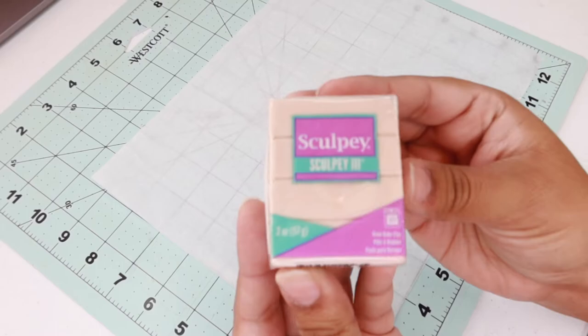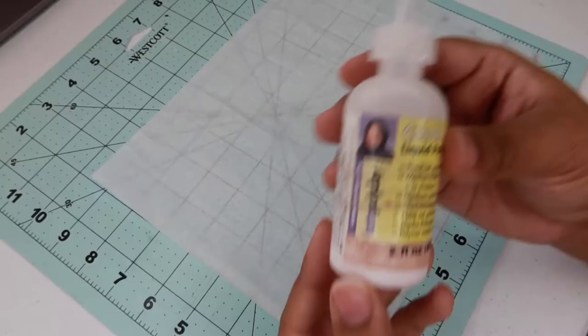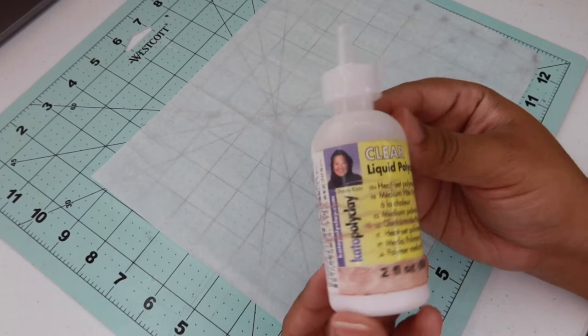Starting off, these are the things that I use. I use Sculpey Clay in the colors Chocolate, Tan, Beige, and Dusty Rose.